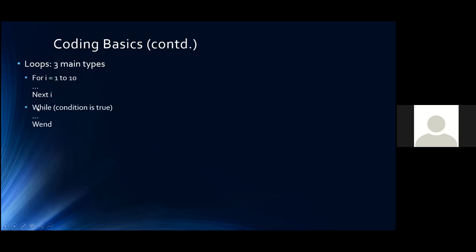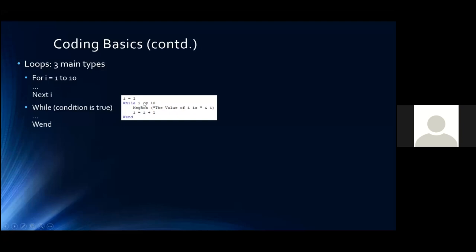The second type is While/Wend. This works by saying: while a particular condition is true, run this piece of code, hit Wend, and go back — keep going until the condition is no longer true. Example: set i = 1, then While i <= 10, show the same message box, then i = i + 1. You must increment the counter yourself — the first time through i is 1, then becomes 2, and so on. That loop also runs 10 times.